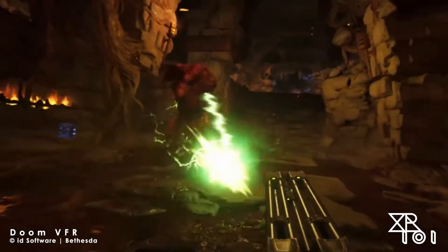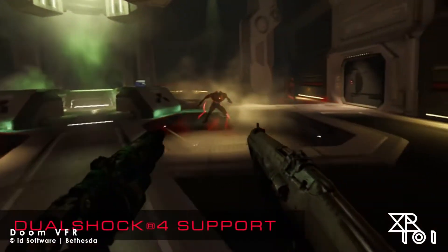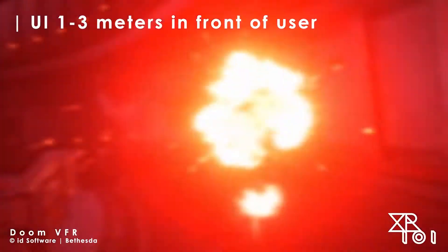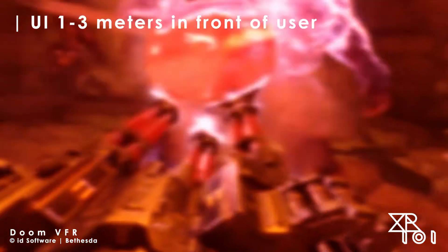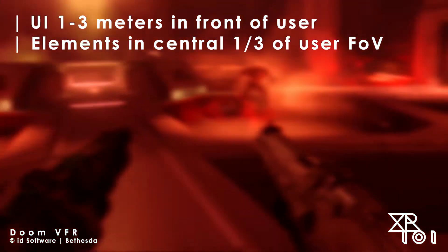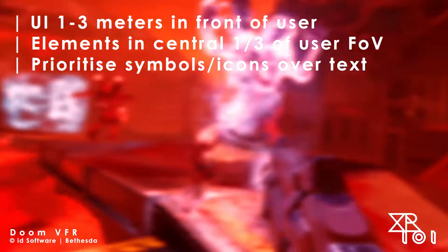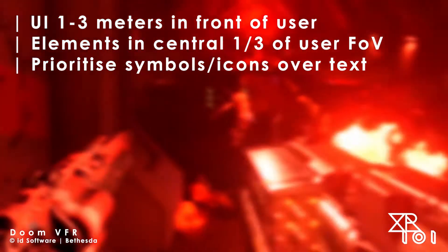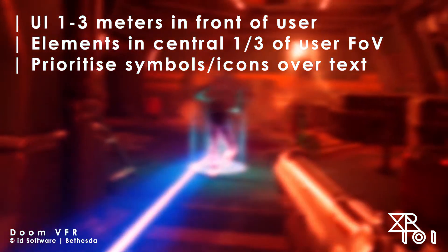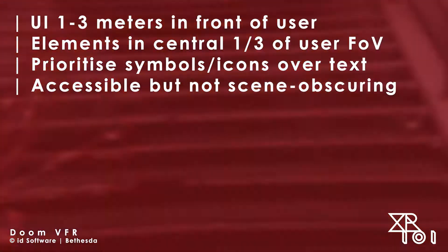We've already mentioned the concave rendering of the UI elements, which is an important consideration. But Doom also follows research-set guidelines which advise GUI elements be placed between 1 and 3 meters forward of the user at all times, and also that they primarily appear in the central third of the user's field of view, never in their peripheral vision. The interface prioritises iconography over text to improve interface efficiency, it scales the interface appropriately, and whilst the act of moving your head to view certain parts of the UI is less than desirable, the UI remains accessible at all times without obscuring the central view.